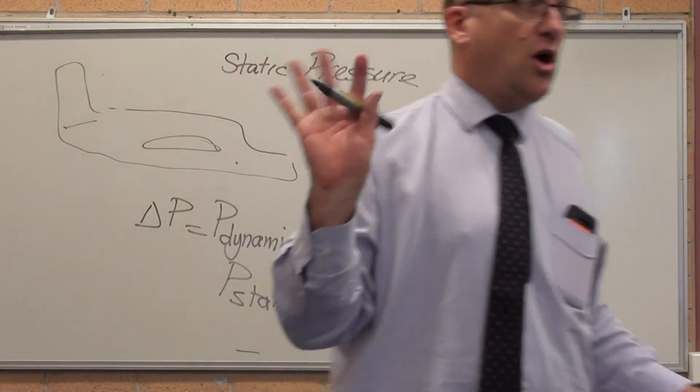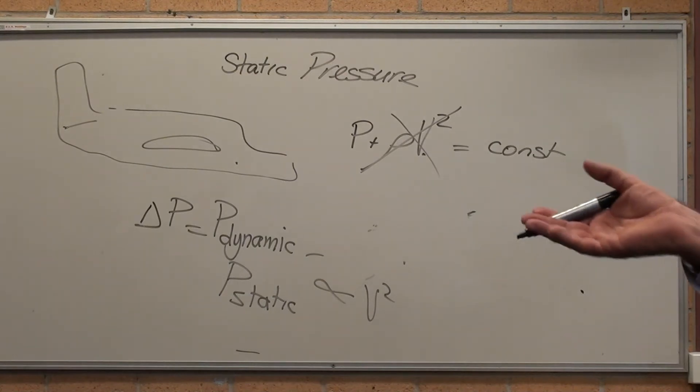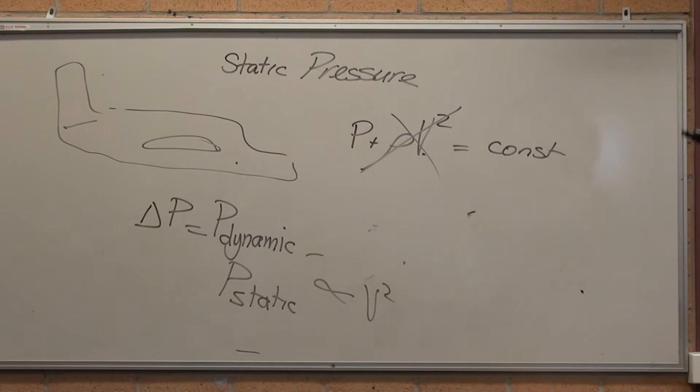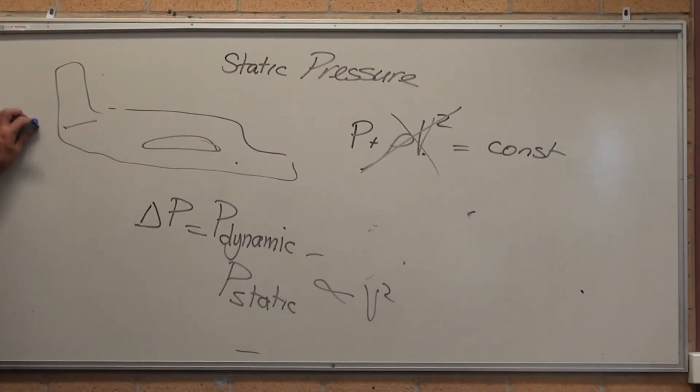So if you have 4 times the difference in pressure, you are traveling twice as fast. If you have 8 times difference in pressure, you're traveling whatever the square root of 8 is. Square root of 8, you're traveling 2.8 times as fast. That's essentially what it is.